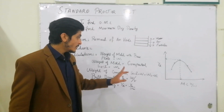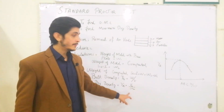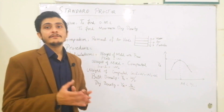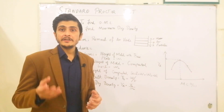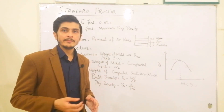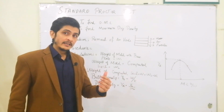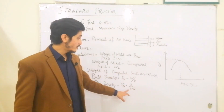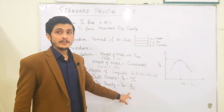Then find the dry density. Dry density gamma_D equals gamma_B divided by (1 + W), where W is the moisture content. Once you have compacted the soil, take a sample and determine the moisture content through the standard oven-dry method or whichever method is feasible. With bulk density and water content, apply this formula to get the dry density.